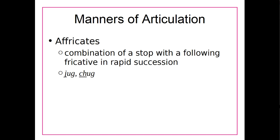For example, with 'jug' and 'chug' — if you say them very slowly, you might notice that 'jug' is kind of a DH sound like the letter D followed by a ZH sound like in 'rouge,' so something like 'dh-jug' if you say it really slowly. But when speaking normally it sounds like one sound: just 'jug.' Same with 'chug' — it's a T sound followed by SH in really close succession, like 'tsh-ug' said slowly. These are the affricates: basically a stop with a fricative following it very closely.